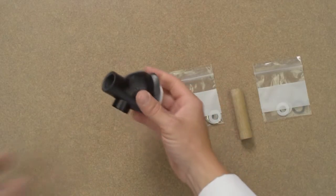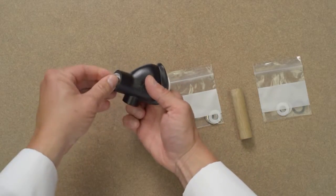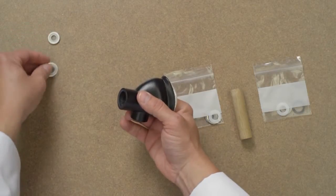First remove the inhale check valves from the Nasal Mask by pushing them out from inside the mask, then set them off to one side.